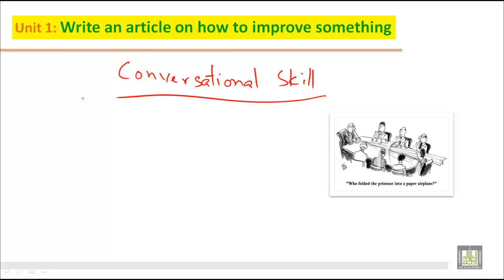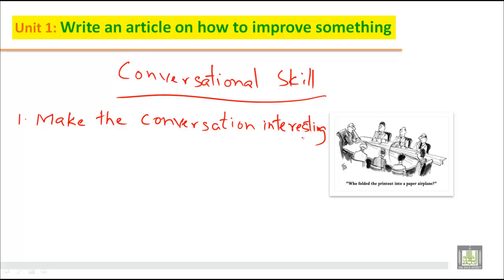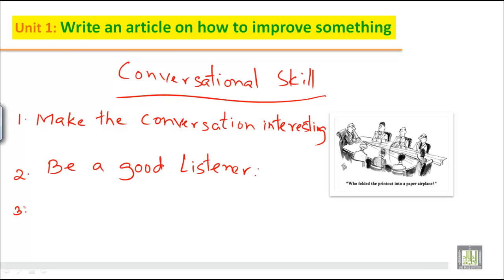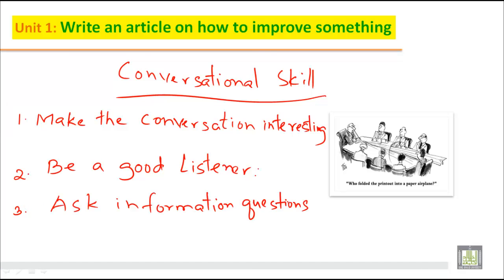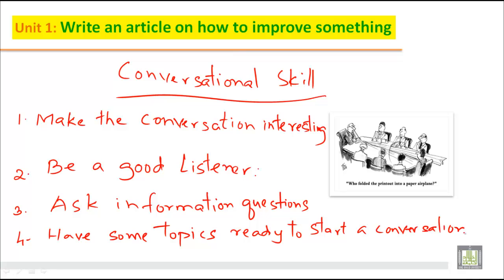We will write our first topic sentence: make the conversation interesting. The second point is be a good listener — you should not only talk but also listen. The third main point is ask information questions. And we can add one more point: have some topics ready to start a conversation. It's always good if you have some topics ready with you.